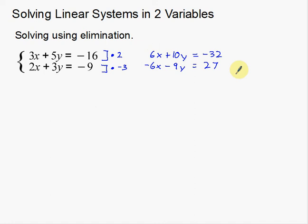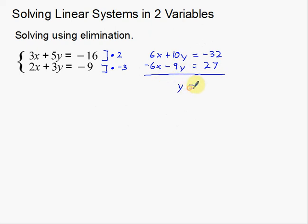Now notice why I multiplied by negative 3 — the x's are now positive 6x and negative 6x. When I add down the columns, the x's add to 0 and are eliminated. Adding down the y column gives positive 1y. Adding the constants gives negative 5.